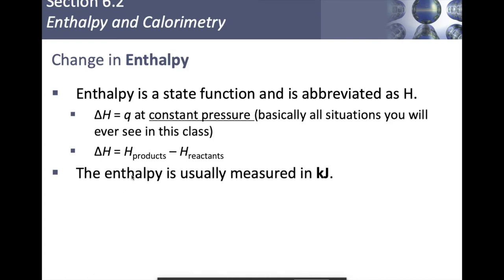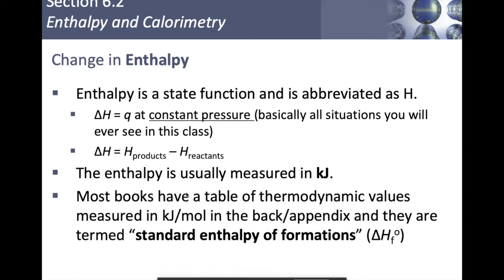Enthalpy is usually measured in kilojoules. In the back of your book you'll find a table of thermodynamic values, and enthalpy is almost always found there. The thermodynamic values are measured in kilojoules per mole, because it depends not just on the final versus initial state but also how much of it you have. What you'll find in your thermodynamic table is called standard enthalpy of formation values — delta H sub f — and the degree symbol means it's standard.